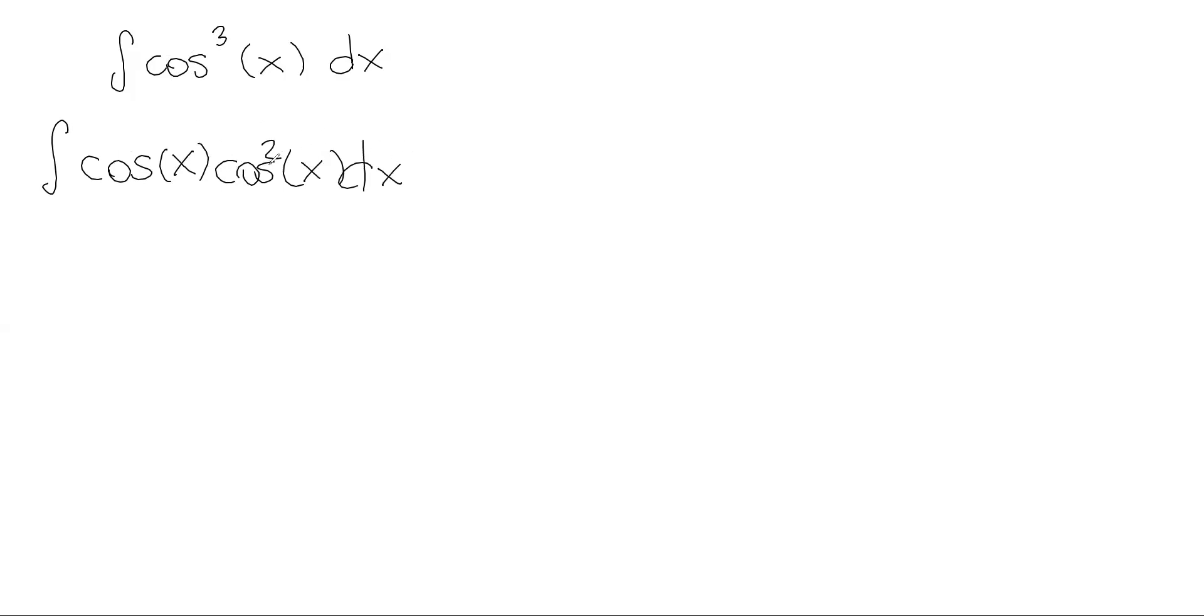And the reason why this works out pretty well is because this is going to end up being a u substitution problem. We're going to rewrite this function so that we have the derivative of some function also appearing in the integral, which makes u substitution just a natural choice for something like this. So for this one, I actually want to use the Pythagorean identity, one of the three we have. So I see a cosine squared x in the integrand. So solving for that thing, we get 1 minus sine squared x.